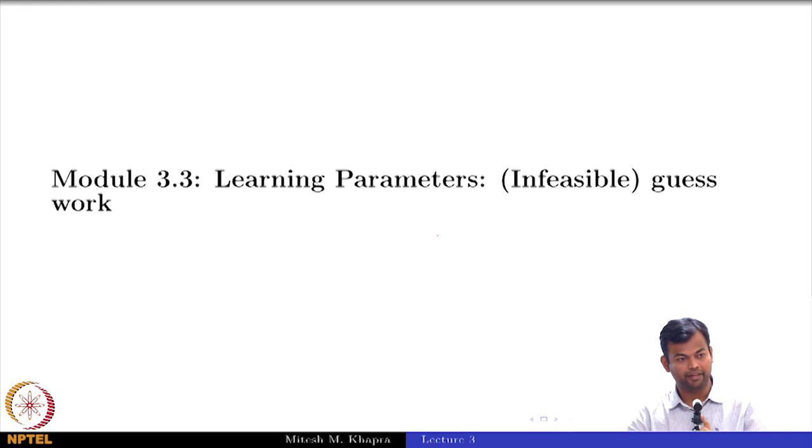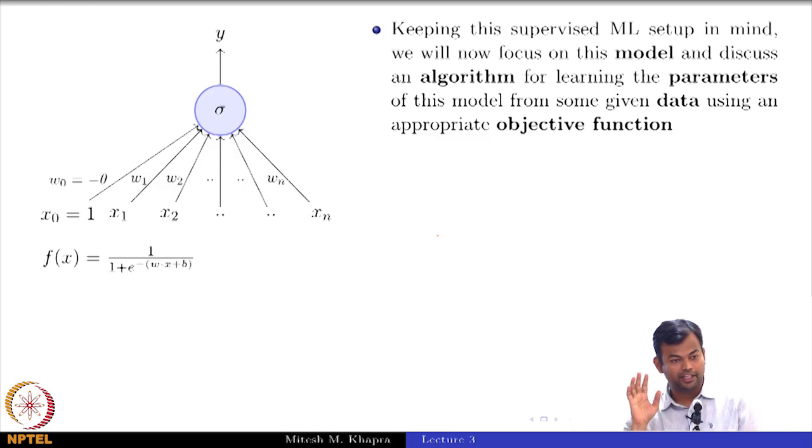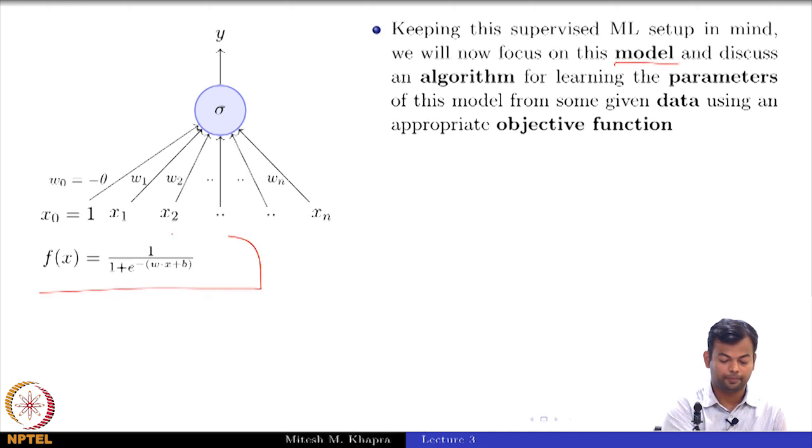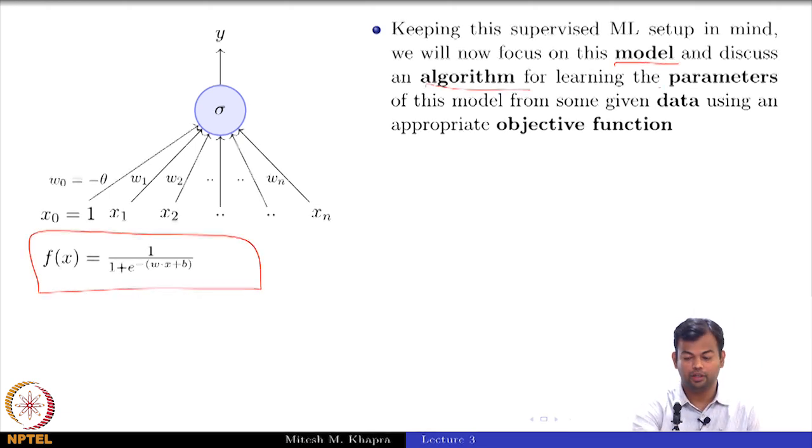And we will move on to the next module, where we will try to learn these parameters. Initially we will try to learn them by guesswork and I will show that that is actually infeasible. That is why we need a more principled approach. We will keep this supervised machine learning setup in mind and now we will focus on this model and discuss an algorithm for learning the parameters which are w and b, given some data using an appropriate objective function.